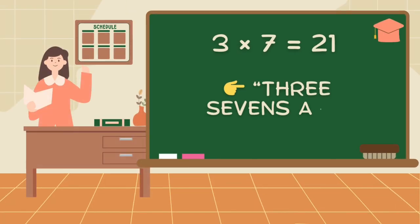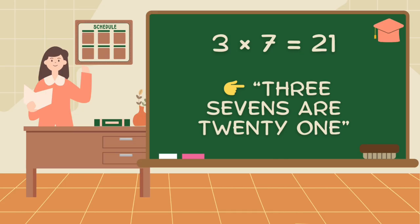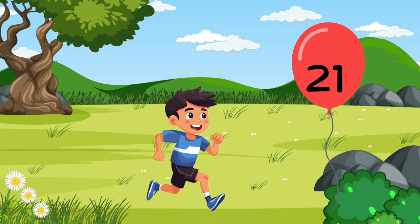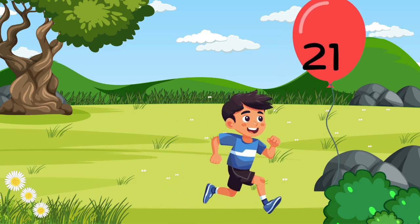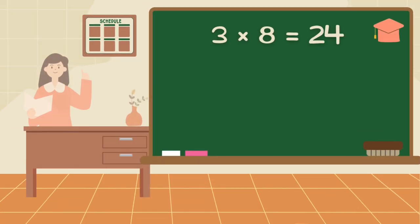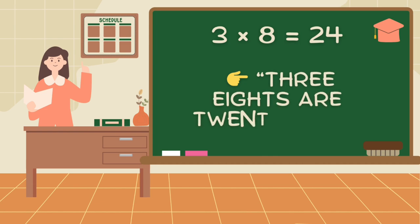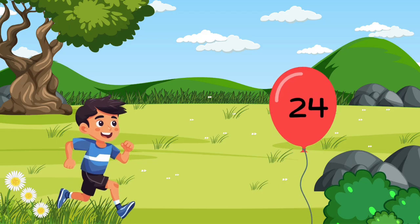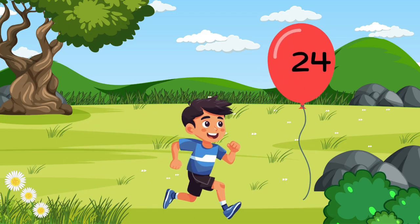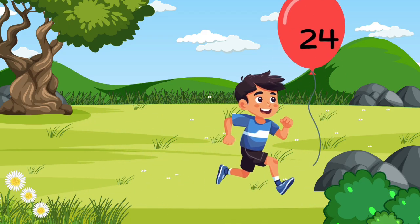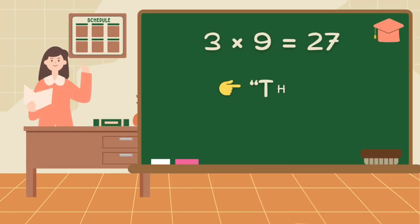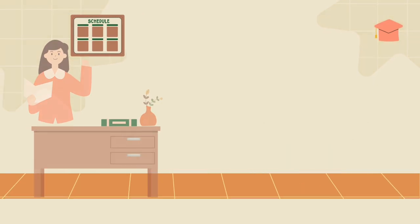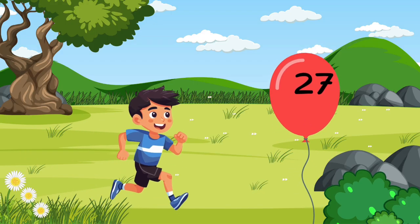Three sevens are twenty-one. Three eights are twenty-four. Three nines are twenty-seven.